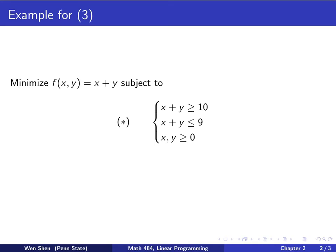Let's take a look at an example for three. That is, there is no solution. Consider the following minimization problem. We want to minimize x plus y and we have the following constraints: x plus y shall be bigger than 10, x plus y shall be less than 9, and x and y are both positive.